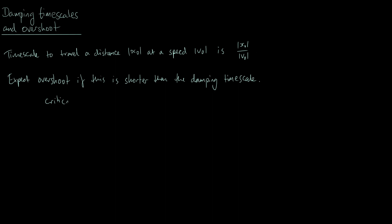For the critical case, the overshoot condition is: modulus of x-naught over modulus of v-naught is less than one over gamma, which rearranges to modulus of v-naught greater than gamma times modulus of x-naught, where v-naught must be directed toward the origin. This matches the result derived rigorously in a previous video, but here we've arrived at it purely from the timescale argument.